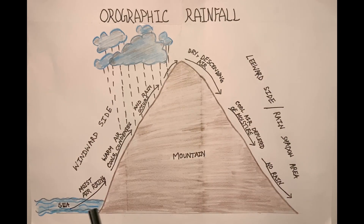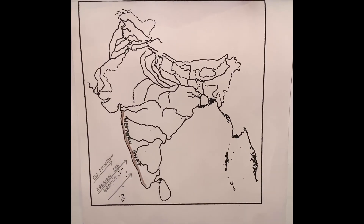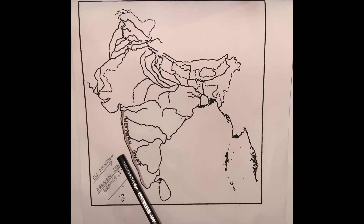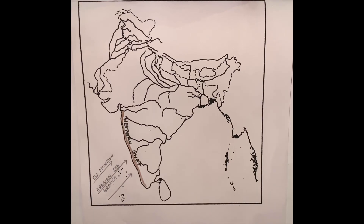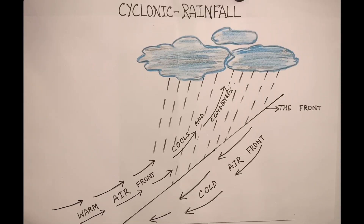For example, in India there is the Western Ghats highland. When the moisture-laden southwest monsoon winds blow from the Arabian Sea side, the windward side of the Western Ghats receives maximum rainfall, whereas the leeward side receives very little or no rainfall at all.